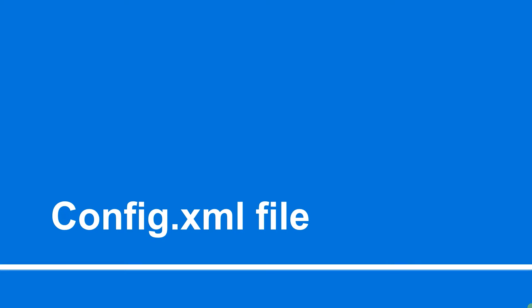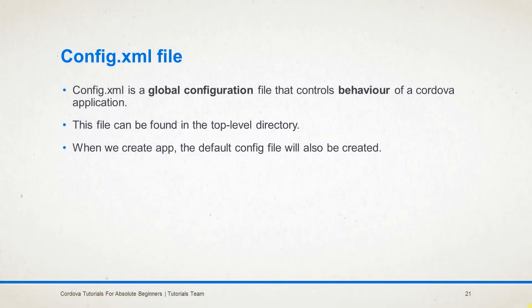In this session we are learning about the config.xml file of Cordova. The config.xml file is a global configuration file using which we can manage the behavior of our Cordova application. This file is placed in the top level directory. When we create the app, the default config file is also created.